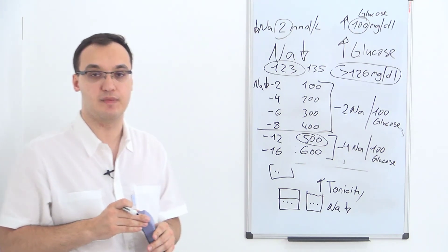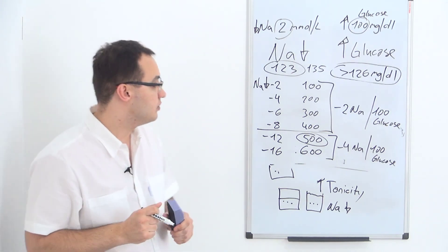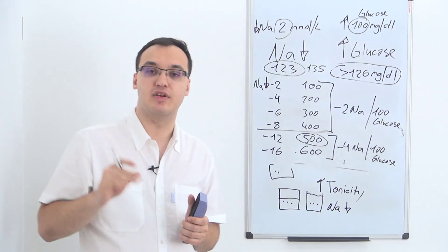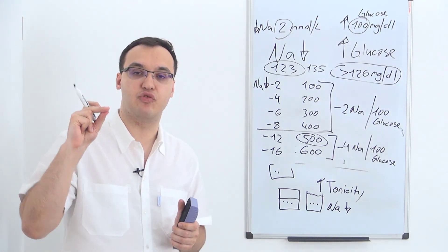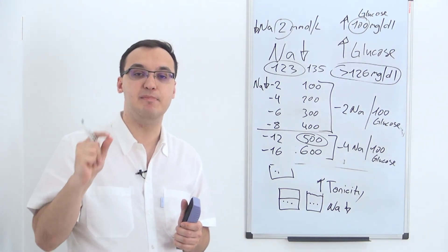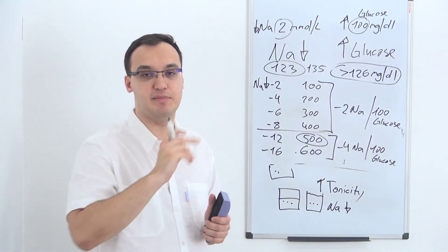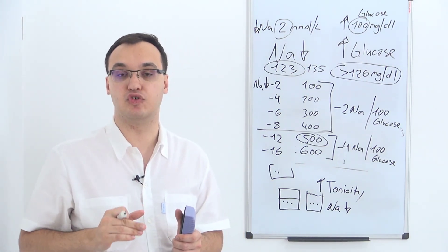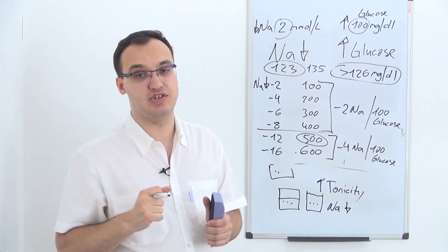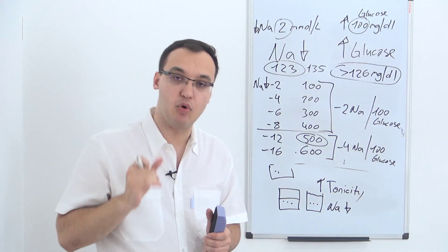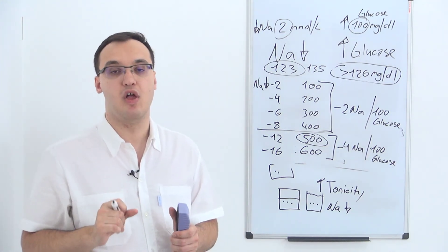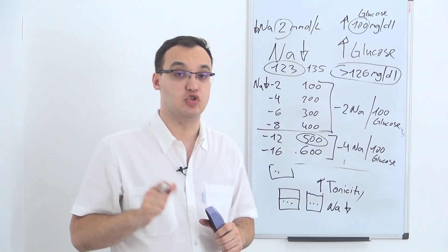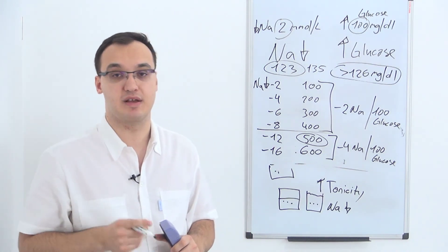If a patient has sodium of 123 but normal glucose, then it is true hyponatremia from another cause, and I need to investigate further. Remember: hyponatremia can be caused simply by a high amount of sugar, usually due to diabetes mellitus. It's very important to always check the glucose level when you see a patient with hyponatremia. Don't forget this — thank you very much.